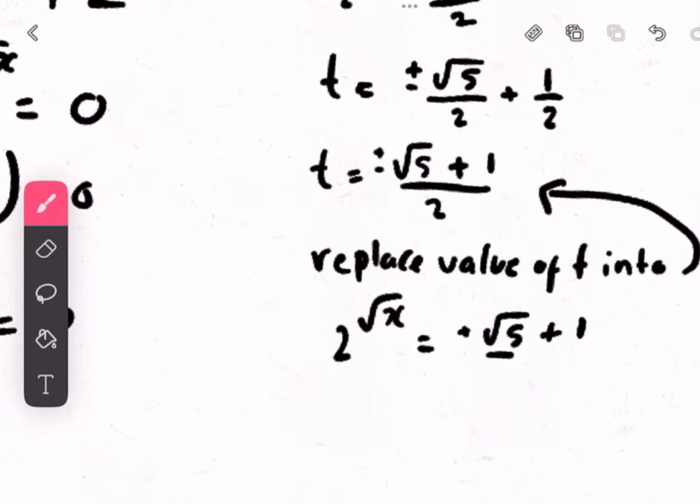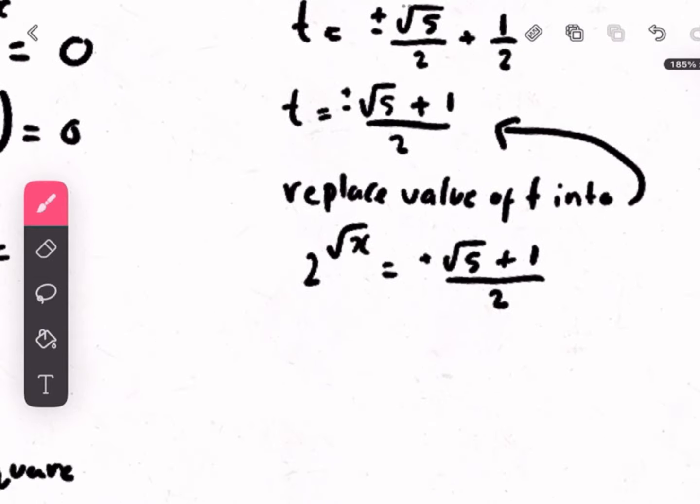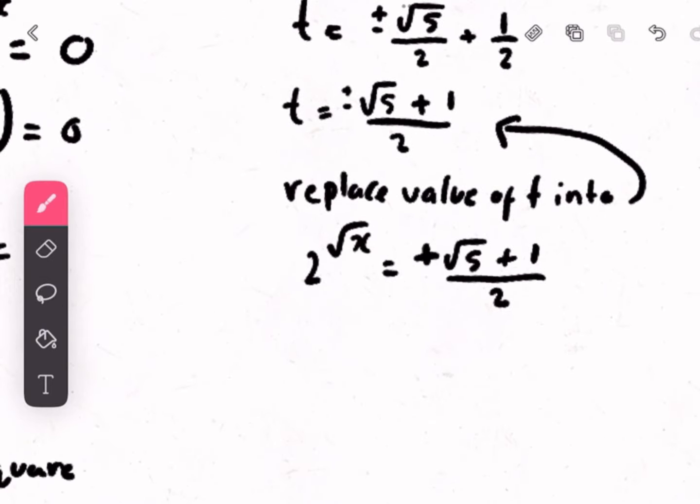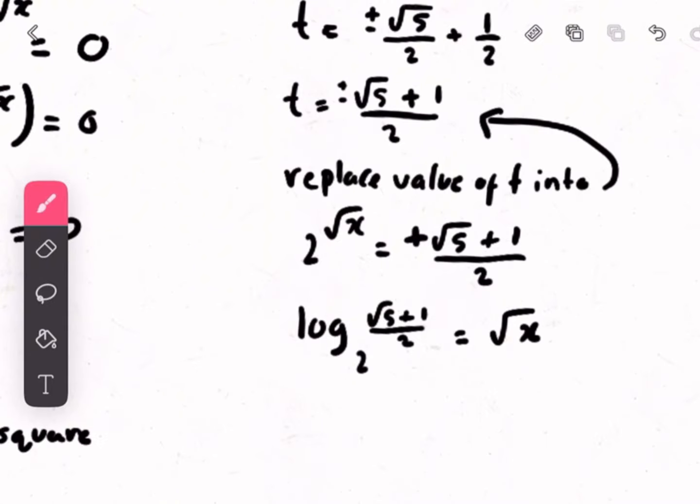So, let's take positive root 5 plus 1 over 2 first, and then we'll do the negative 1 later. Now, using log, we can use log b, p, n, and we can make it into log form. And we end up with this answer.